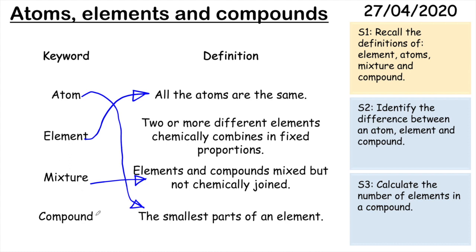So the final one, compound, must be this one here. Two or more different elements chemically combined in fixed proportions. So that means we do now have different elements, but instead of not being bonded, they are bonded now. They're bonded together in a fixed proportion. We'll learn more about compounds in coming lessons.